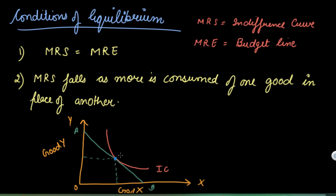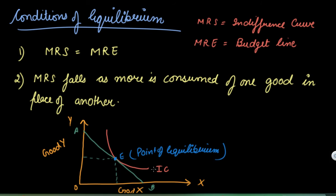When the budget line is tangent to the IC curve, that is the point of equilibrium. The point of equilibrium is E. Here both conditions are satisfied: MRS is equal to MRE, and the marginal rate of substitution is falling, meaning the IC is convex to the origin.